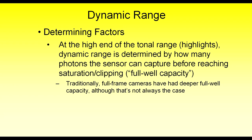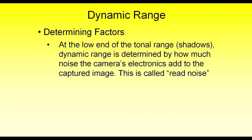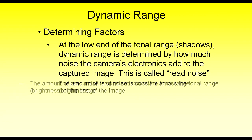Traditionally, full-frame cameras have had deeper full well capacities than crop cameras, but that's not always the case. In more contemporary designs, a lot of these crop cameras have equal full well capacities relative to some of the full-frame cameras. At the lower end of that tonal range — between the shadows and the highlights — the dynamic range is really established by how much noise the camera's electronics adds to the captured image. This is what's called read noise — noise that the camera introduces into the image that's not already there.